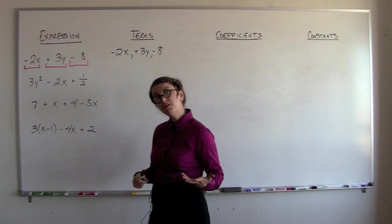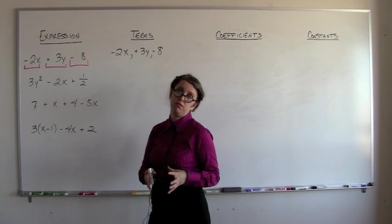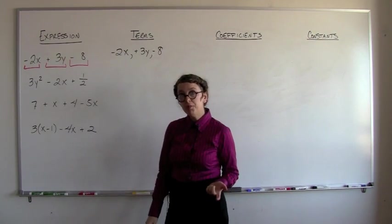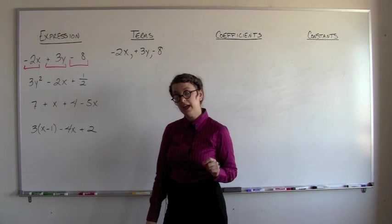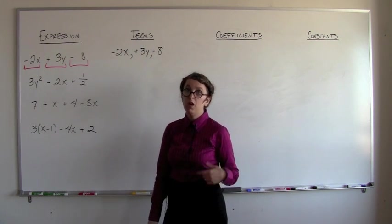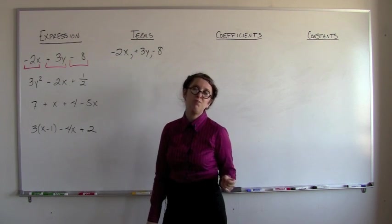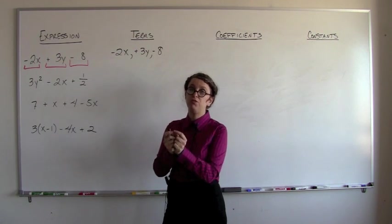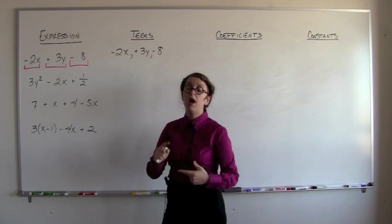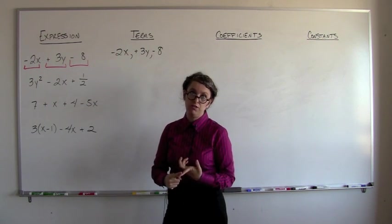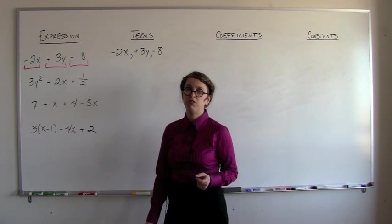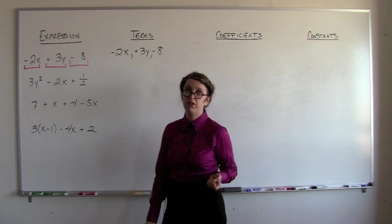So terms can be broken up into smaller pieces of math yet. We already talked about variables. Variables are the letters that are standing in the place of numbers. So the numbers that happen to be stuck onto the letters—remember that a number stuck onto a letter means that those two things are times together. A number stuck onto a letter is called a numerical coefficient.